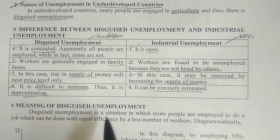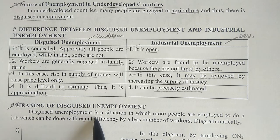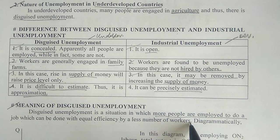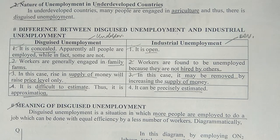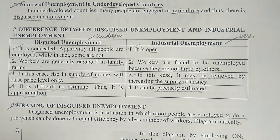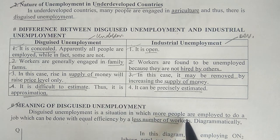What is the meaning of disguised unemployment? Disguised unemployment is a situation in which more people are employed to do a job that can be done with equal efficiency by a fewer number of workers. When more employees are employed but the same efficiency is maintained with fewer, that is called disguised unemployment.